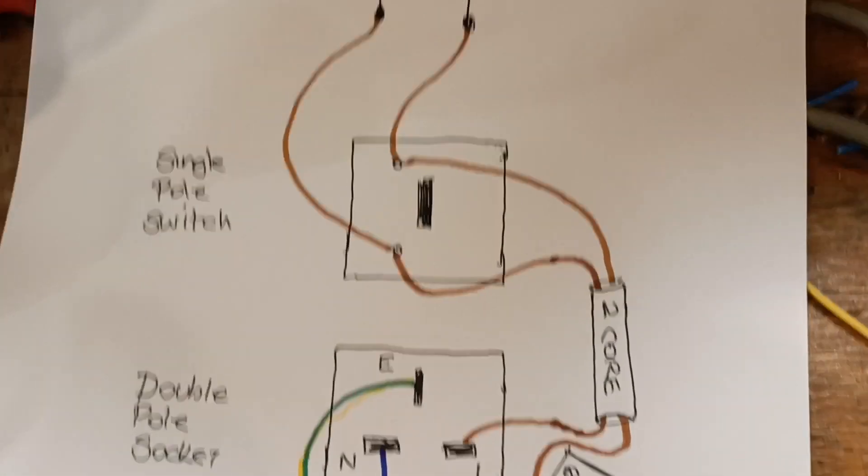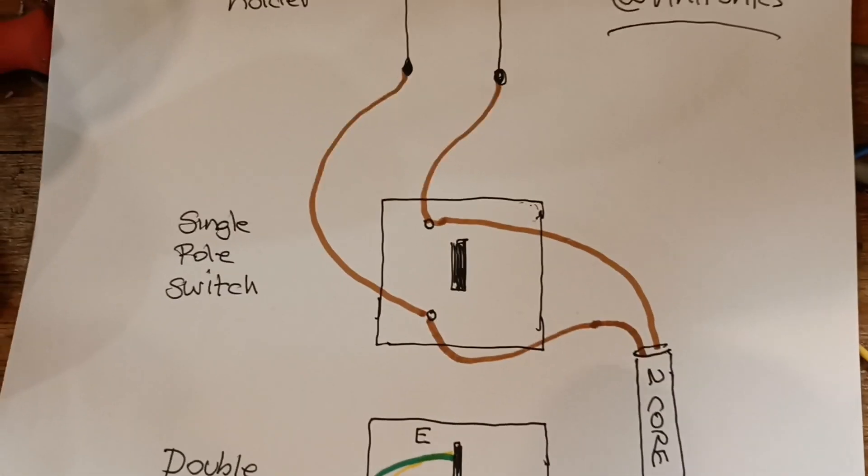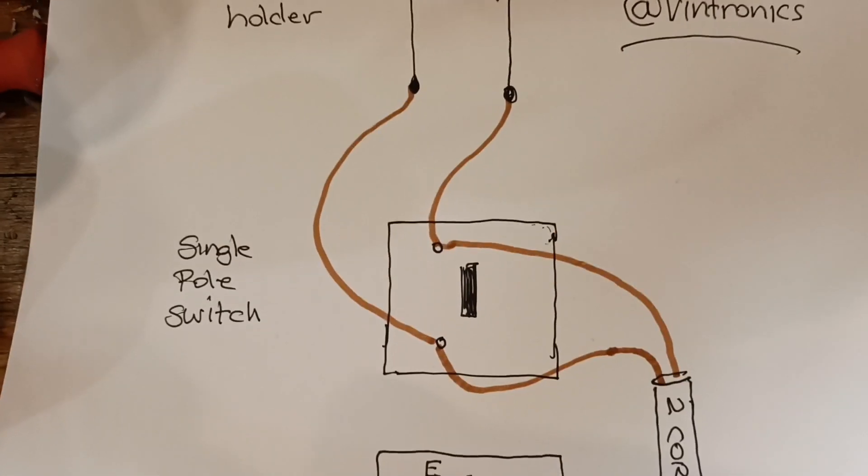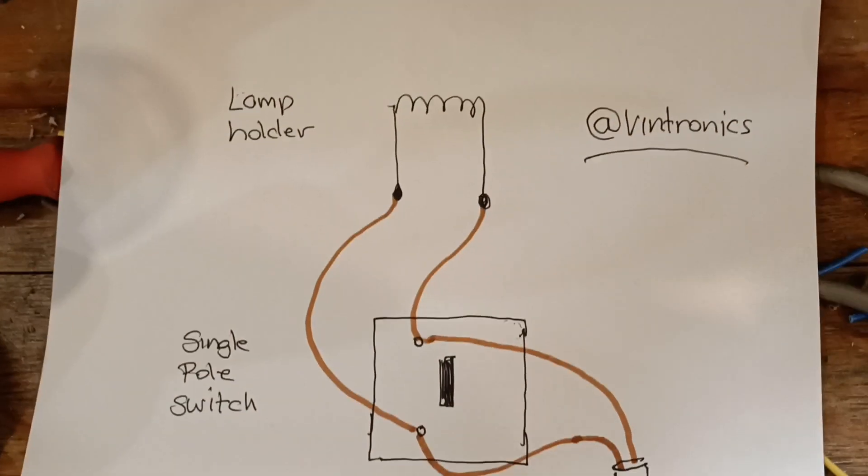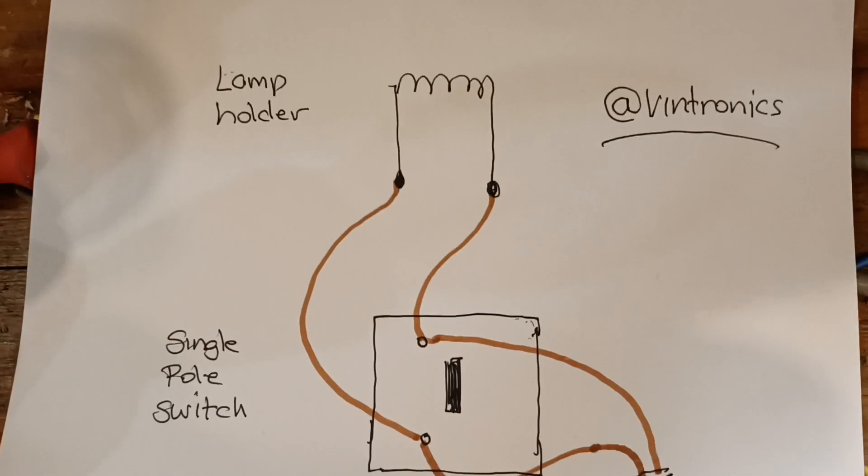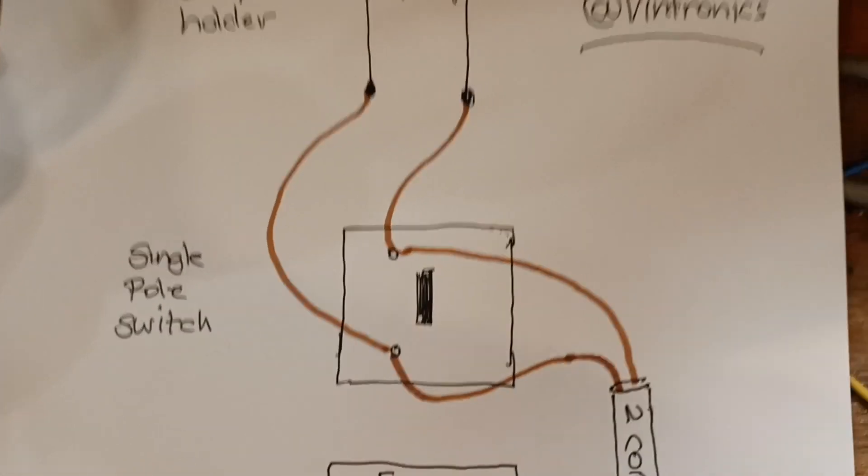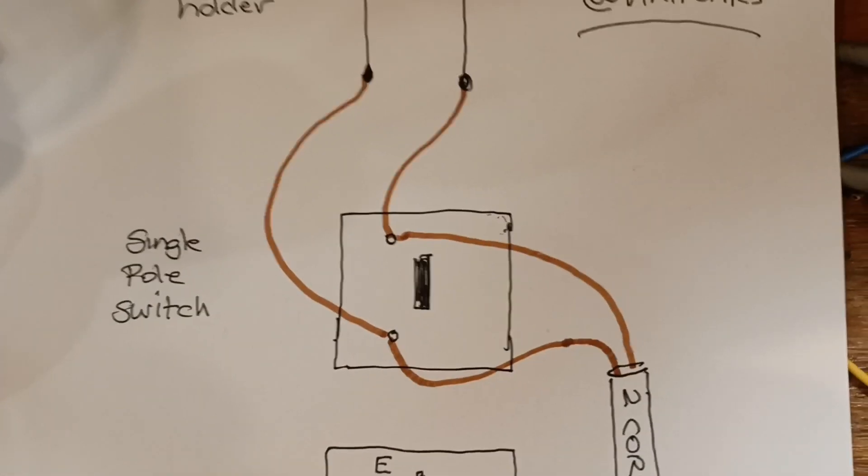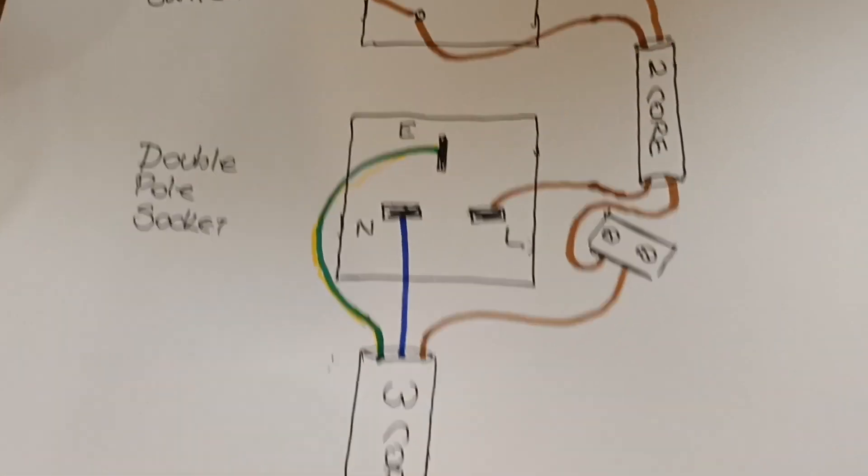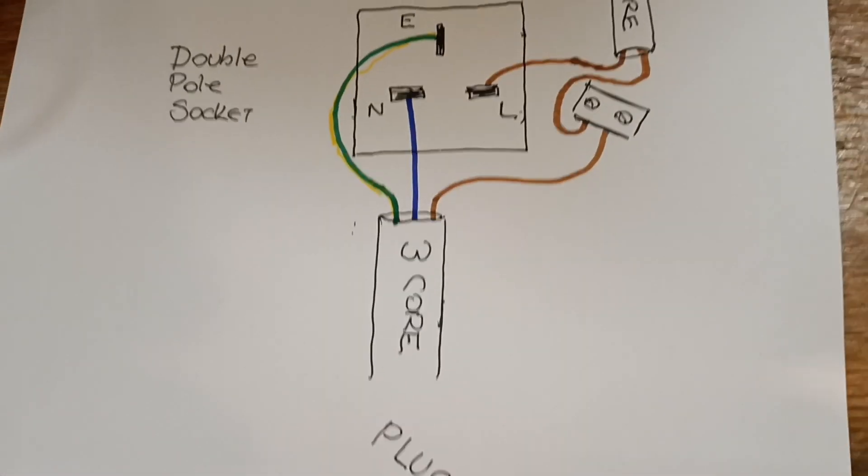You're going to run one cable into the single pole and one from the lamp holder, and then the same on the other side. So when you switch that, it's going to turn it off. Okay, that's as easy as I can explain it for you.